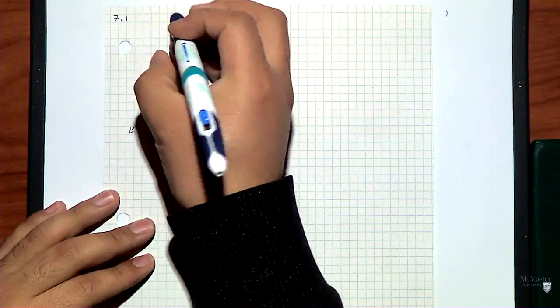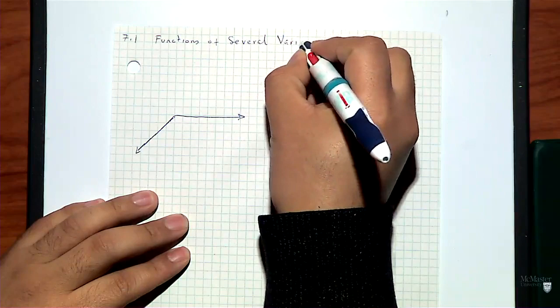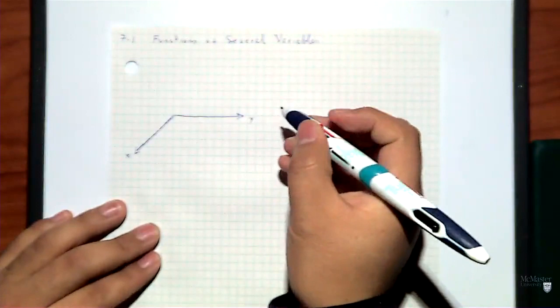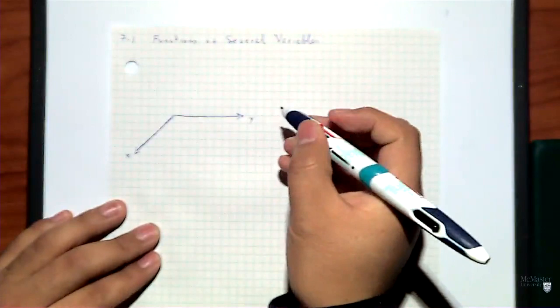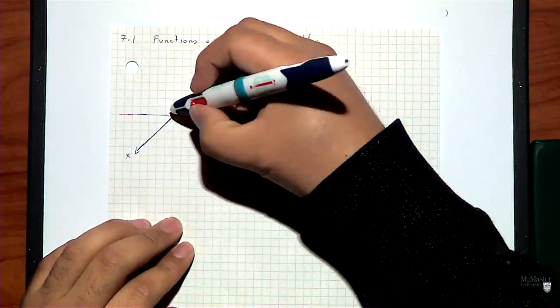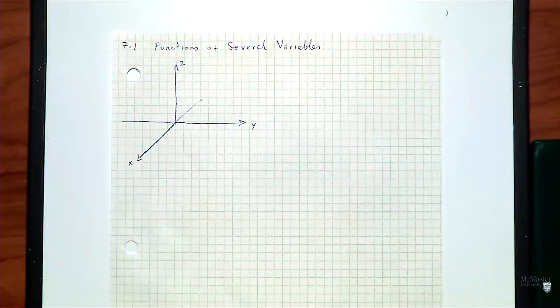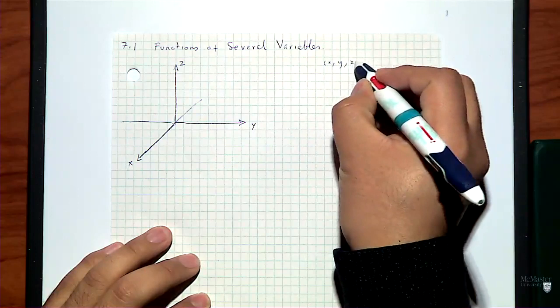We are basically on functions of several variables. This is the XY plane. You can continue the X axis over here — that is horizontal — and then you will have a vertical coordinate called Z, which is the height. You have points X, Y, Z. Let's say that you have the point 1, 2, 4.